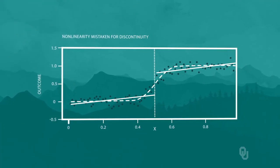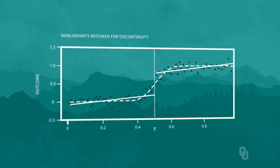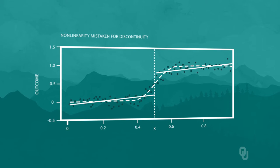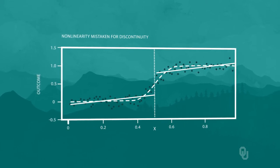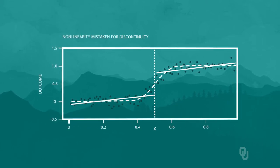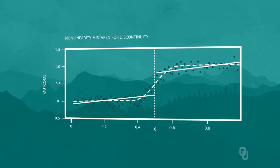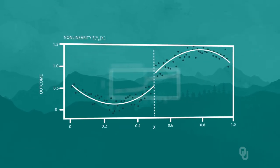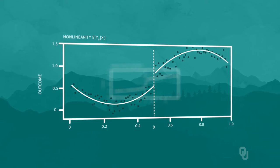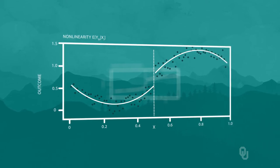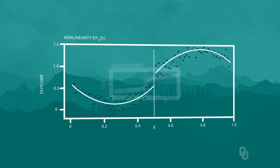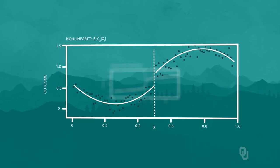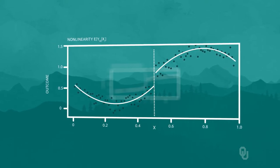Consider the following graph from your text that illustrates the issue. As you can see, given the true nonlinear relationship in the data, the linear model estimated a treatment effect that is not really there. Here's an example of fitting a polynomial to estimate the treatment effect. The model in the graph regresses the outcome on the level, square, and cube of x, along with a dummy variable that shifts the intercept at the cutoff point. In this example, a significant treatment effect is found.